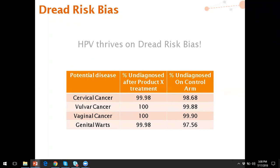If you look at these very small percentages, you could talk about 50 to 70 times fewer people getting cervical cancer or other cancers by using the treatment. So by leveraging relative preference bias along with dread risk bias, you get people to think: this is serious, I'm 50 times less likely to get this disease if I use Product X. That makes a lot of sense because they don't want to end up with cancer or die from having HPV. But the reality is that even without treatment, the odds of actually having the disease would be very low.